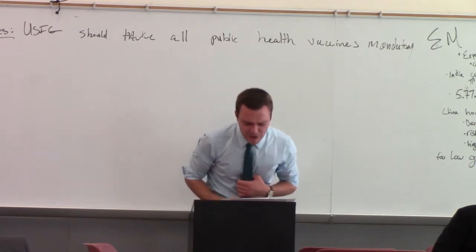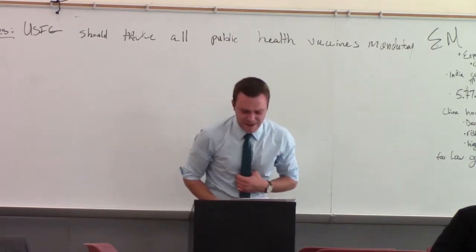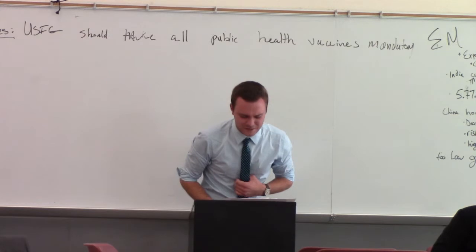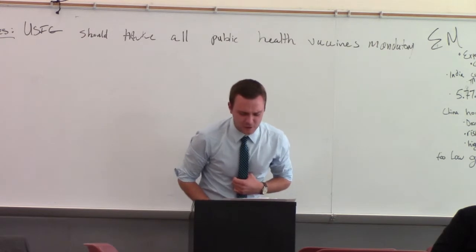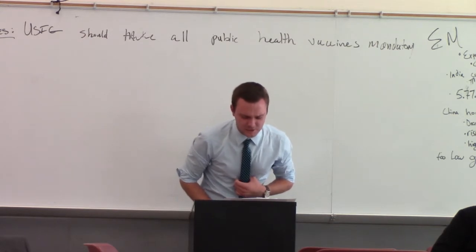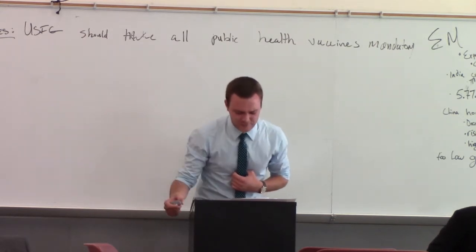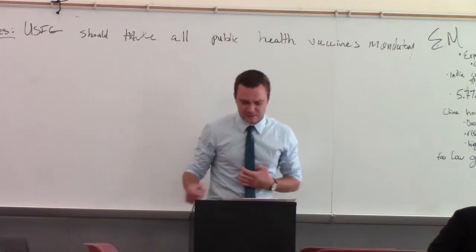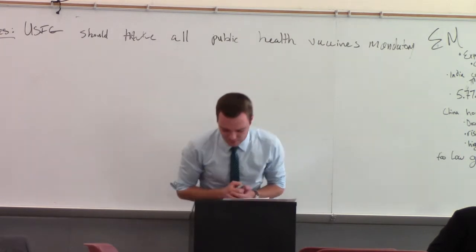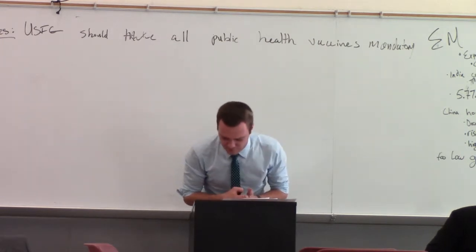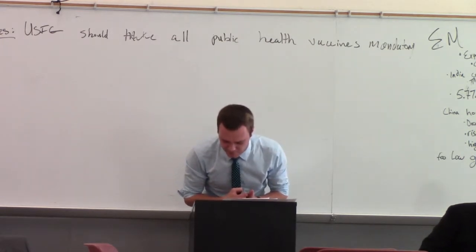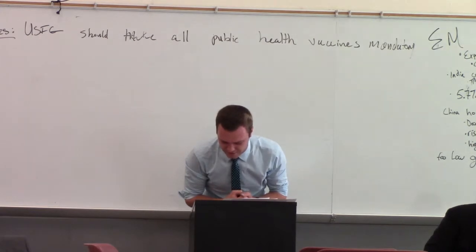Observations, here is the background. The only argument here is that the science against vaccines has been debunked — there is no causal link to autism, and that is probably not a reason not to give a child a vaccine anyway. The plan: The United States federal government, through an act of Congress signed by the President, will make all public health vaccines mandatory.